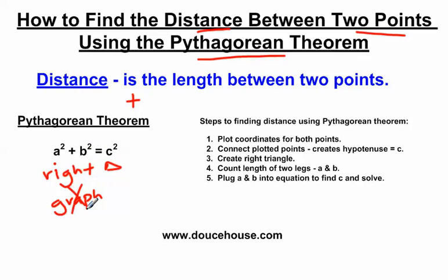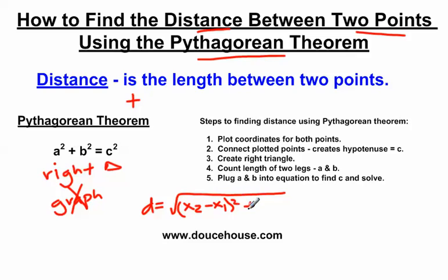If you do not have a graph, you cannot really use the Pythagorean Theorem, so we would have to default to using the distance formula, which is d = √((x₂ − x₁)² + (y₂ − y₁)²). If you're not familiar with that equation, I've got a video on my website dowshouse.com — look under the first six weeks of videos and you'll find a video called Distance Formula. Watch that video and it will help you solve it. But we're going to have graphs on these example problems.